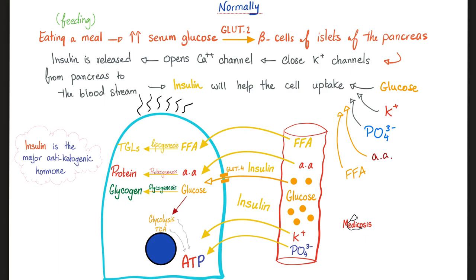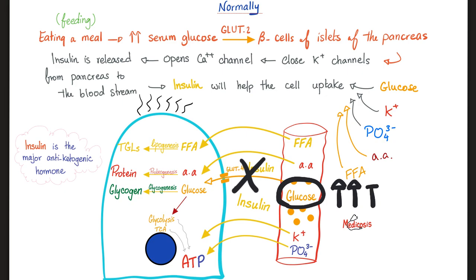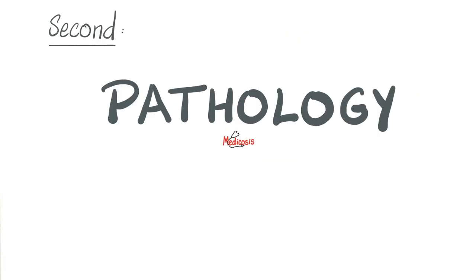But what happens if I have diabetes mellitus? Insulin is not functioning, glucose is not entering into the cell, glucose is going to remain in your blood, and this causes a rise in blood glucose sugar, which can lead to a variety of symptoms such as the evil non-enzymatic glycosylation, which can damage many a tissue.